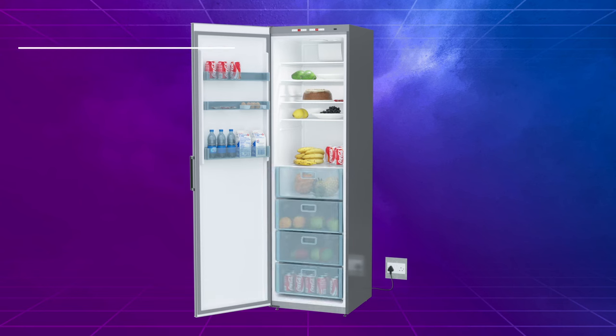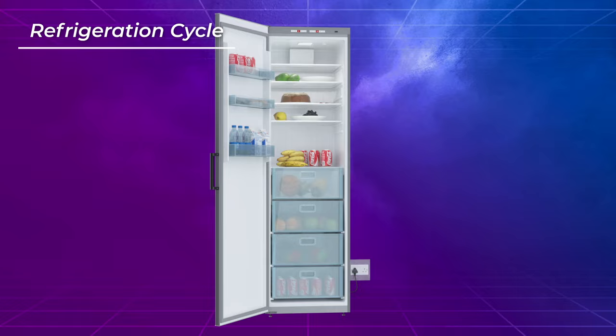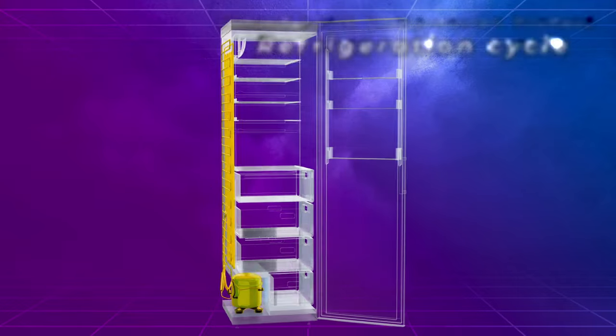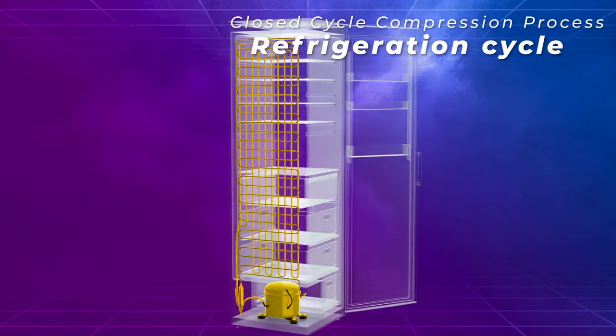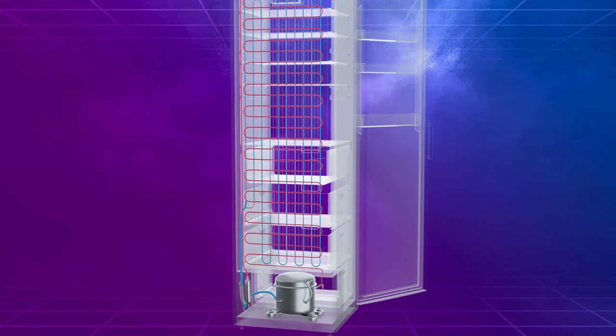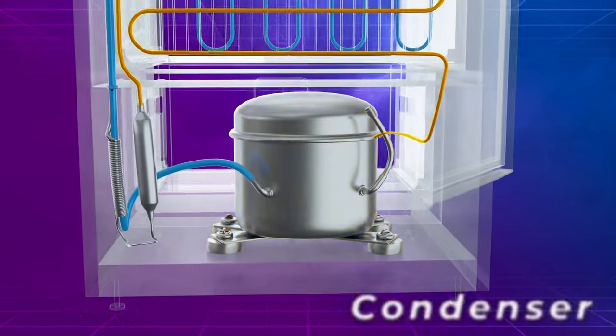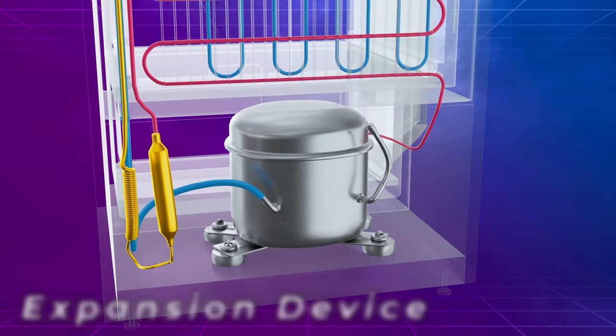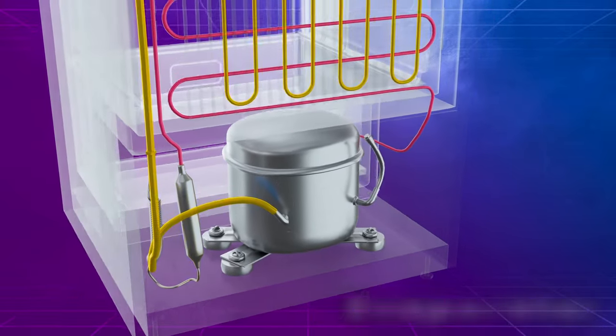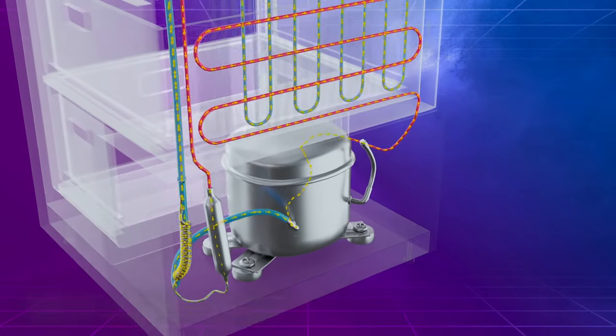Now let's talk about the heart of the fridge, the refrigeration cycle. Inside the fridge, there's a closed-cycle compression process that involves five main components: a compressor, condenser, expansion device, evaporator, and refrigerant.